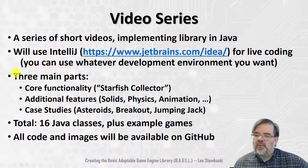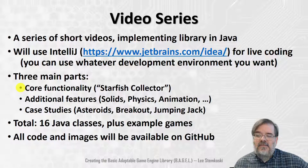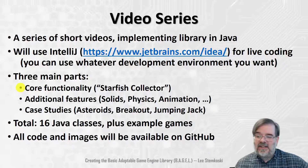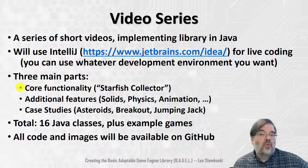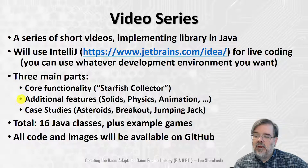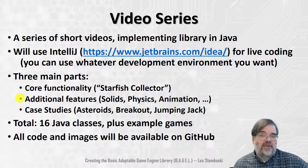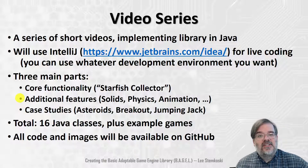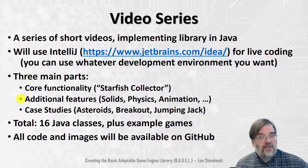The video series will be in basically three main parts. Approximately the first third will introduce the absolute minimum core functionality we need to create a game — and we'll talk about that first game in the next video. I think one of the simplest games you can create would be a collection-style game, and the one I like to create is called Starfish Collector. After creating that core first example, we'll move on to add more advanced features to make the game look more professional and polished — for example, solid objects, more refined collisions, physics simulation, animations, and other features. So we'll improve upon this core game in the second third of the course.